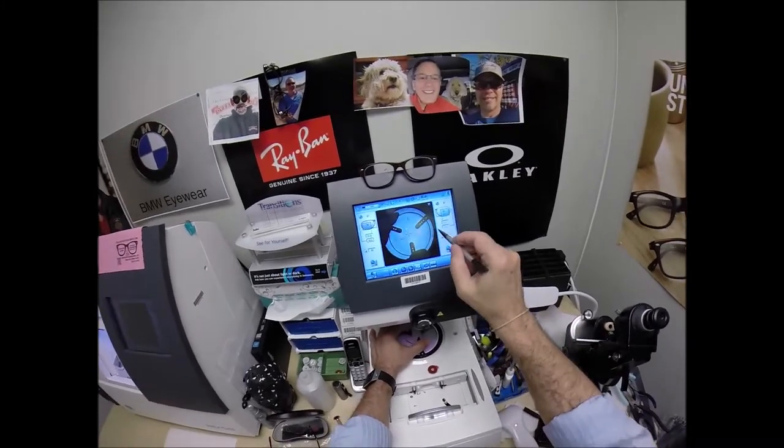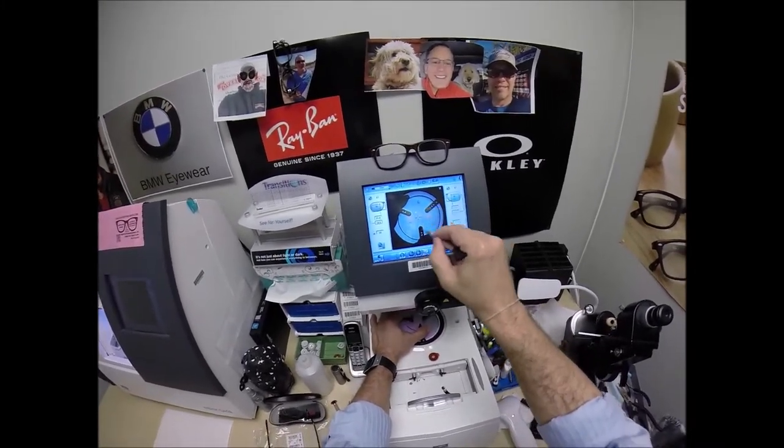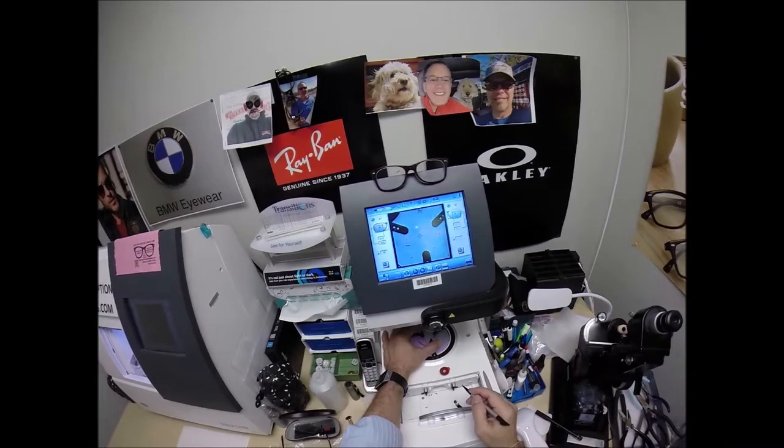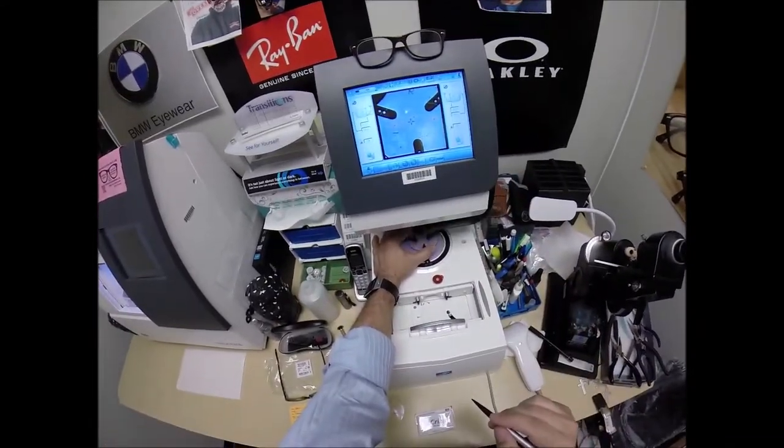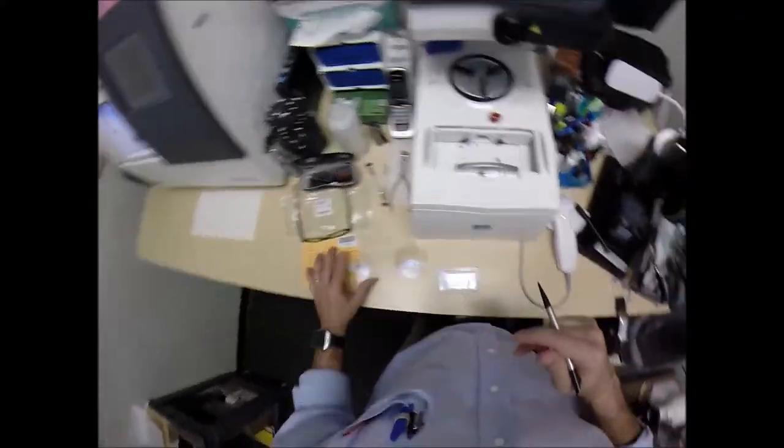And I always like to hit this button, make sure that I can see the lens is large enough to cut out. I always like to see that myself. Hit that button. The arm comes down and places the block onto the right lens.